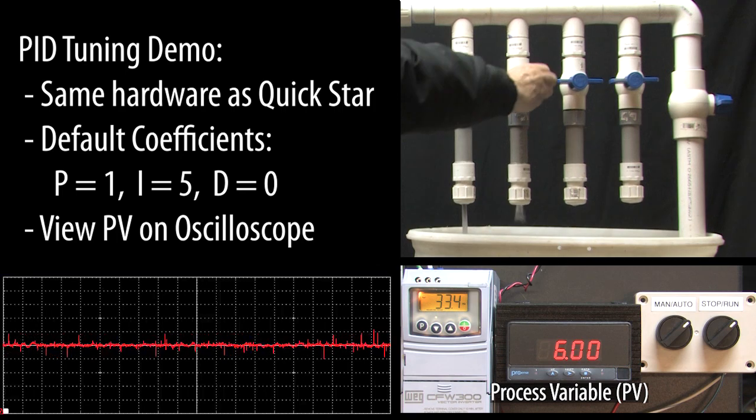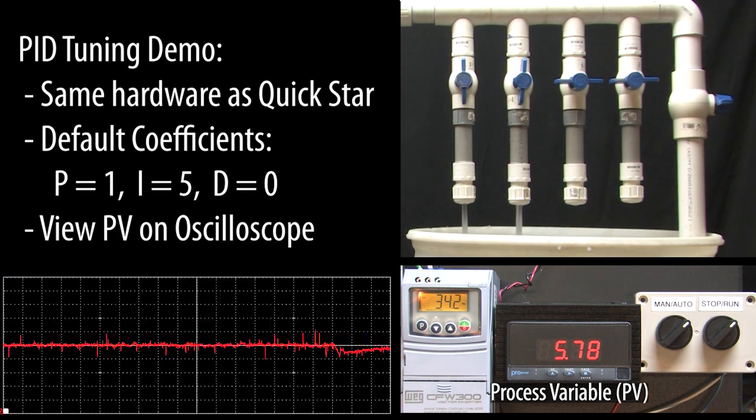We're at 6 psi and the drive output is at about 33.4 Hz. I'll open a valve and we see the pressure drop and then slowly climb back up to 6 psi over 10-15 seconds.